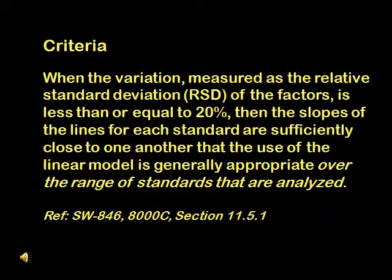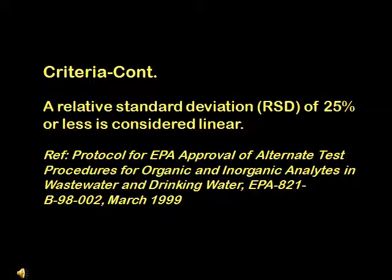Common criteria specified by EPA is that the RSD of the factors is less than 20% in order to use the average RF or CF for calculating concentration. Do note that some methods specify more stringent criteria. For example, EPA method 1631 for low-level mercury specifies a less than or equal to 15% RSD for the calibration factor. And some references do accept a wider RSD criteria of 25%.